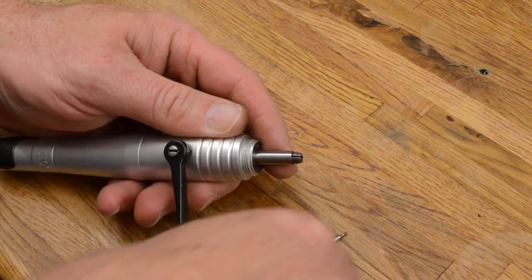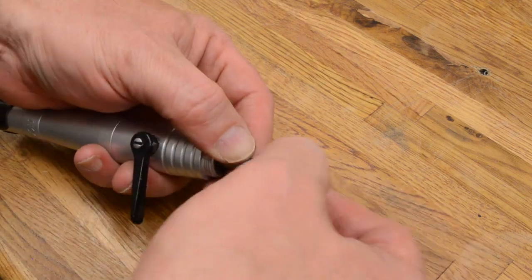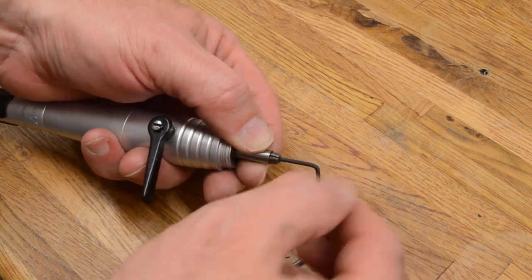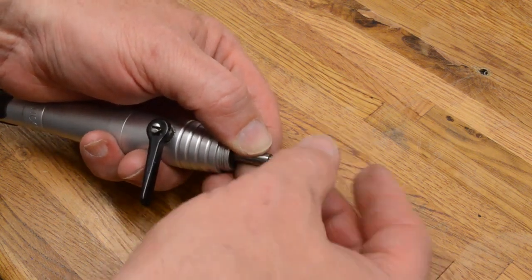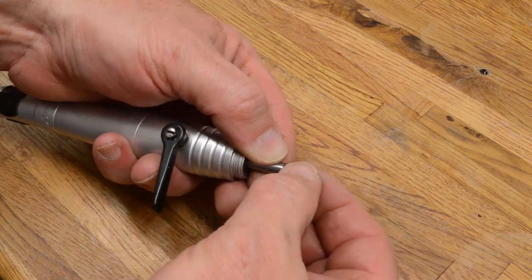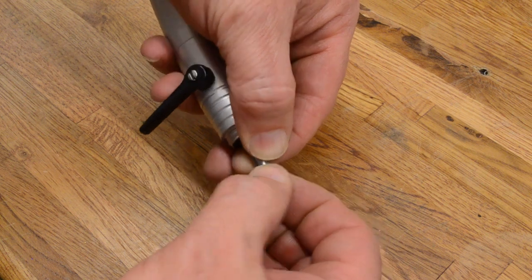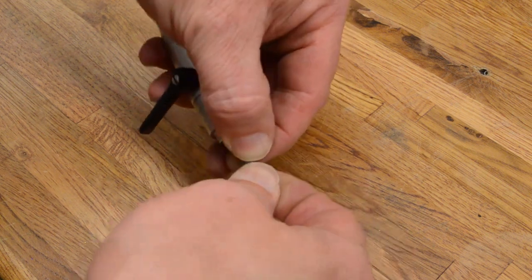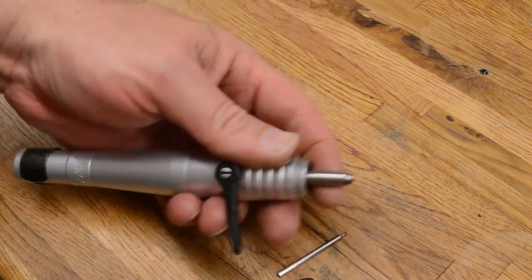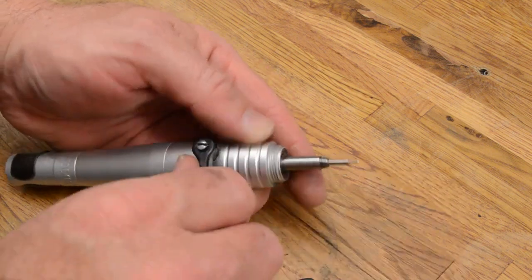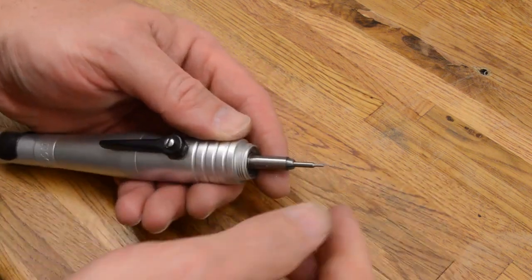So I'm going to reach in with my Allen wrench, and I'm going to back off that set screw a couple of turns, and then I'm going to screw in the collet a couple of turns until it stops. Then I will retest and see if it blocks my bit.